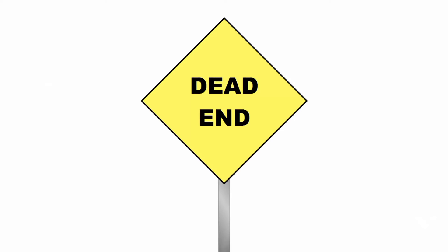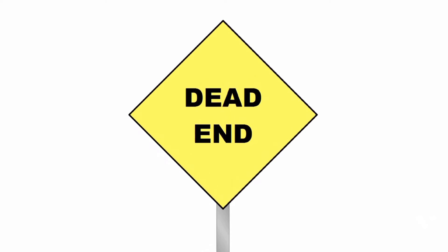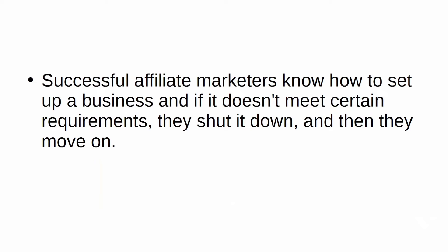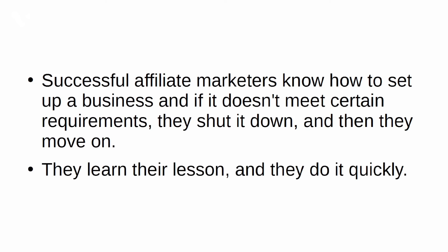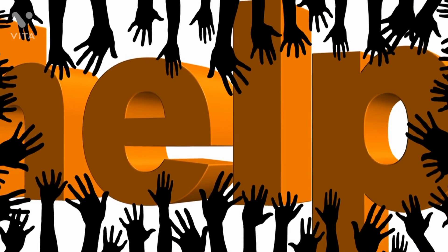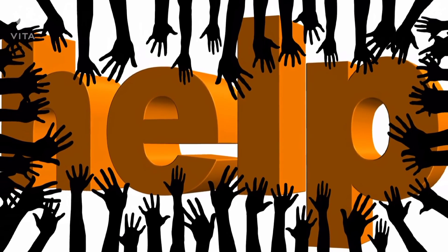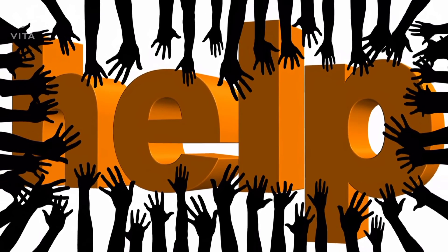They fail quickly: not all opportunities lead to money — some are dead ends, others take too many resources. Successful affiliate marketers know how to set up a business and if it doesn't meet certain requirements, they shut it down, move on, and learn their lesson quickly. They ask for help: successful affiliate marketers are not loners. While some may be antisocial, they are not shy about asking for expert help. They do not let their pride or ego get in the way of getting the help they need to succeed.